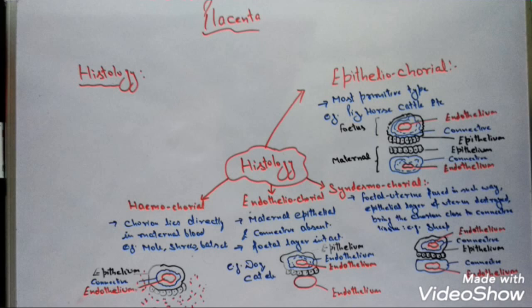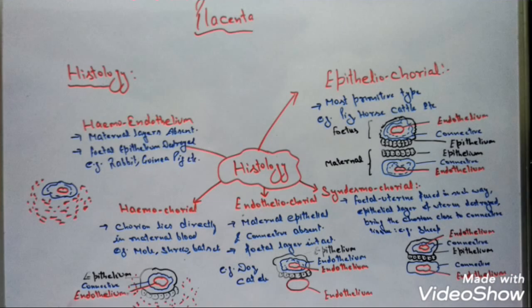In hemochorial placenta, the placental component includes all three layers of the fetus and the blood of the mother's uterine tissue — meaning the fetus along with its three layers lies directly in the blood of the mother. The next is hemoendothelial type of placenta. Here the fetus also loses its epithelial tissue, so the connective tissue of the fetus lies in direct contact with the uterine blood of the mother. Common examples of hemoendothelial placenta include rabbit and guinea pig.